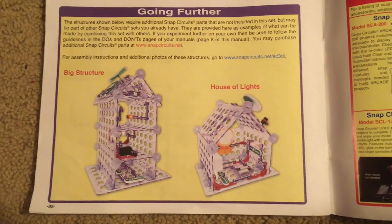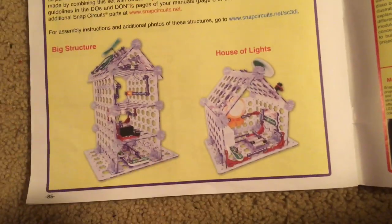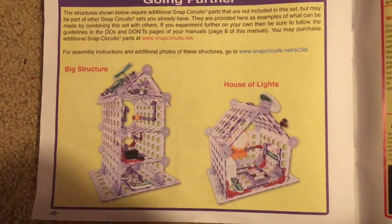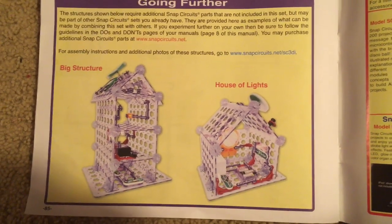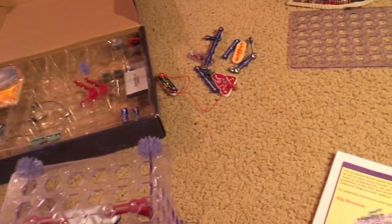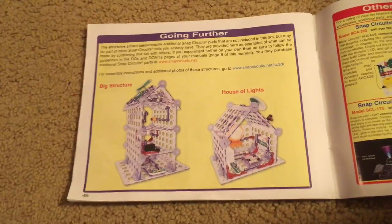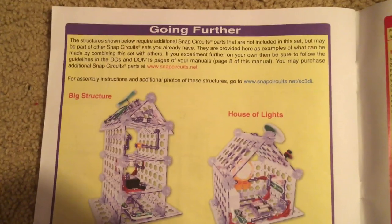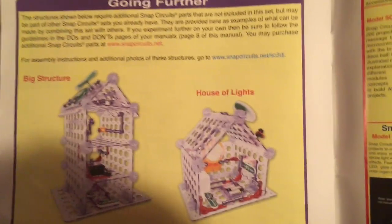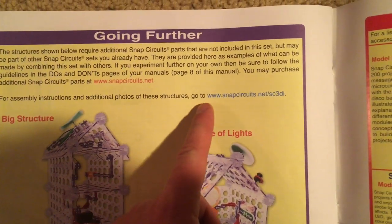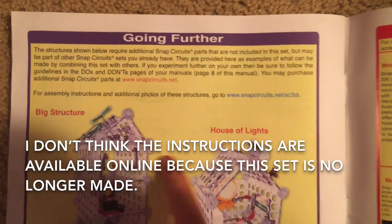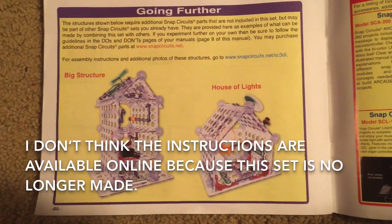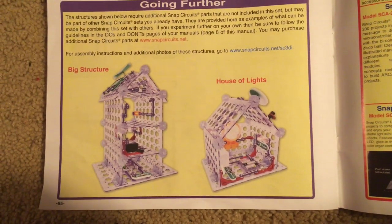Now here's a bonus. You can build these structures, but they require additional Snap Circuits parts which are not included in this set but might be included in other kits that you might have. You can use them and refer to the Snap Circuits website for instructions and photos that tell you how to build these structures.